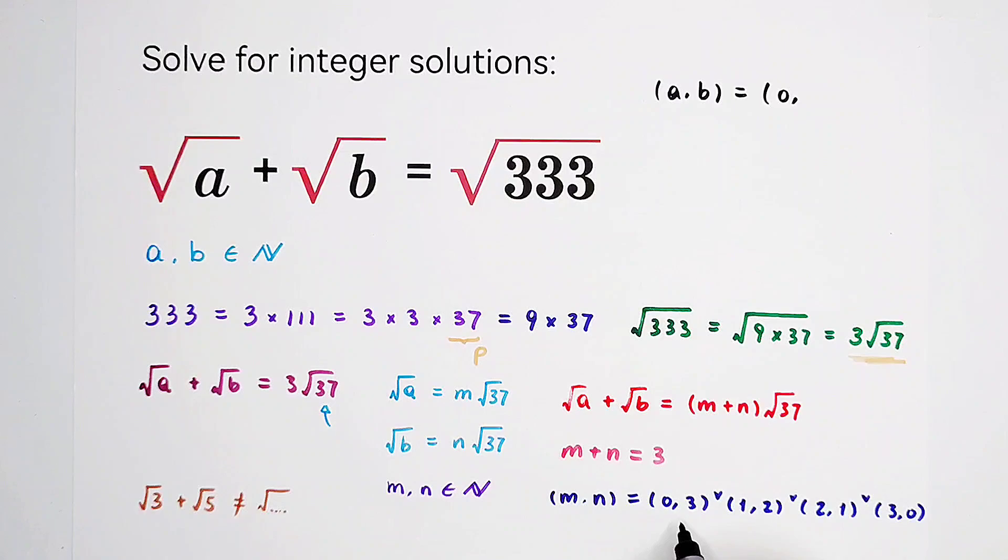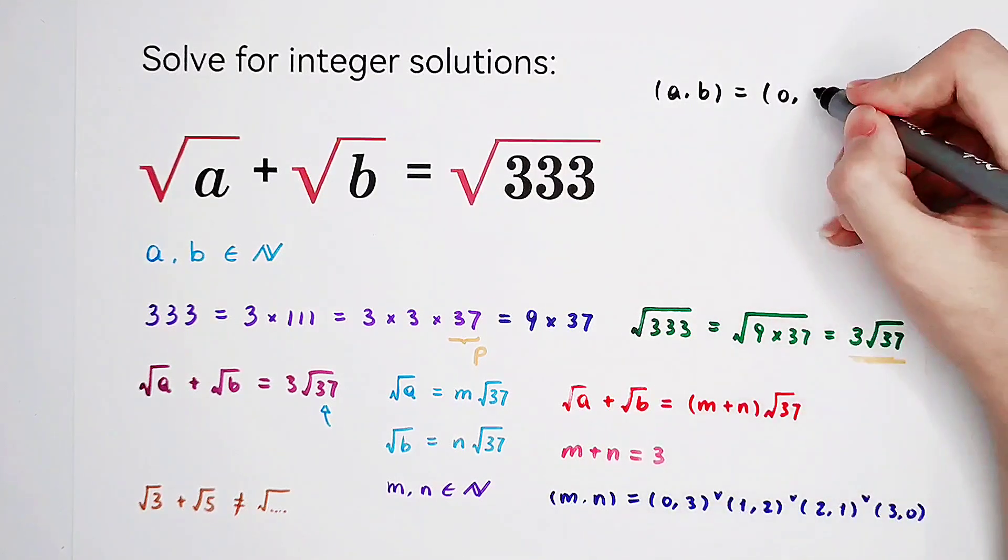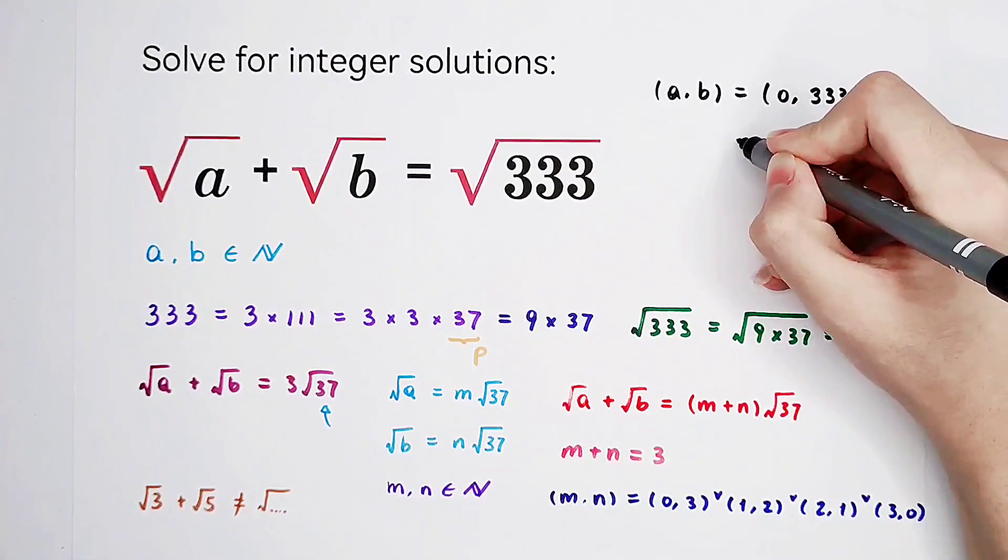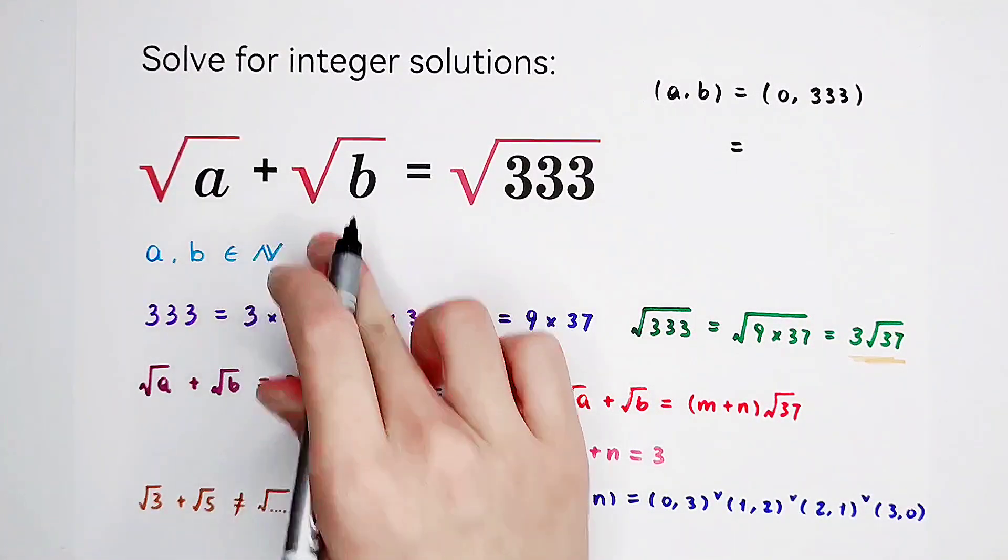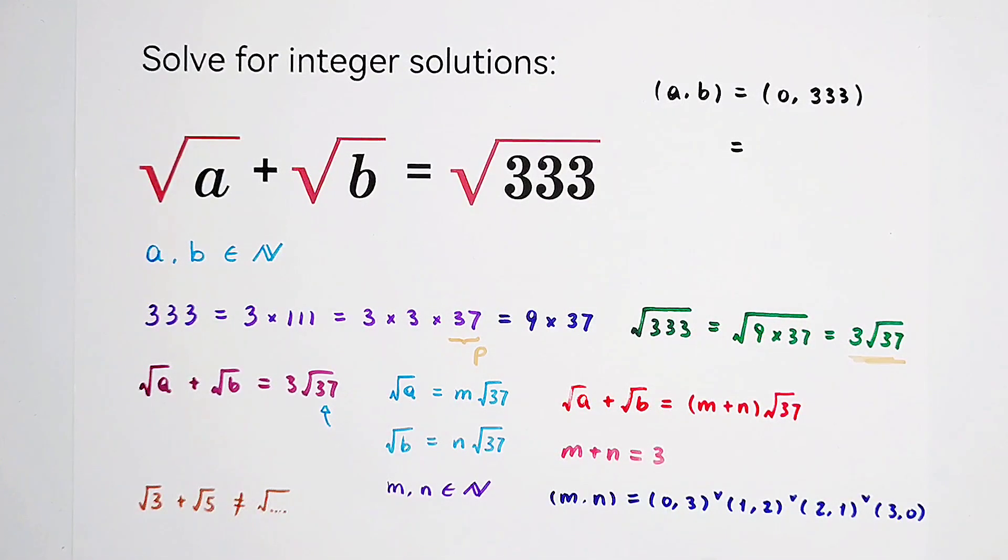So square root of b is just 3 times square root of 37. So that means square root of b is square root of 9 times 37. And in this case, b is 333.